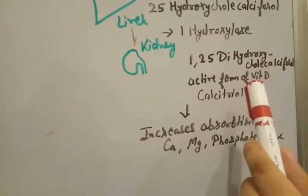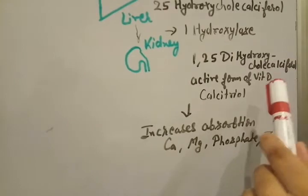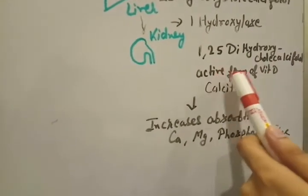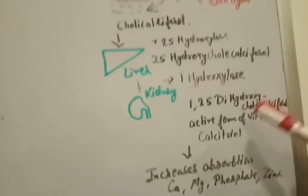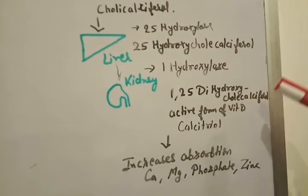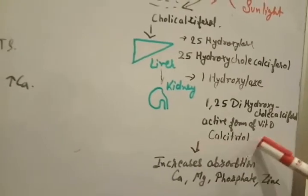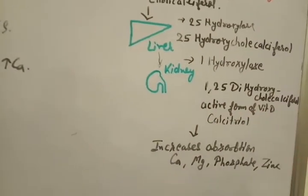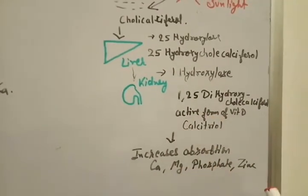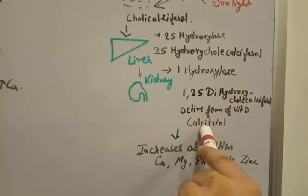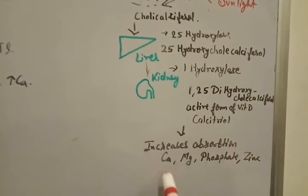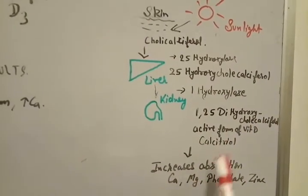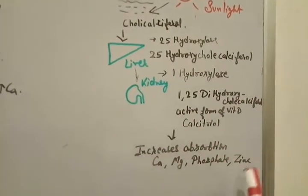So many times in so many examinations they like to ask which is the active form of vitamin D. This one is the active form of vitamin D. We can say 1,25 dihydroxycholecalciferol or we can say calcitriol. This calcitriol is the active form of vitamin D and this is helpful in increasing the absorption of calcium in our body, magnesium, phosphate and zinc.